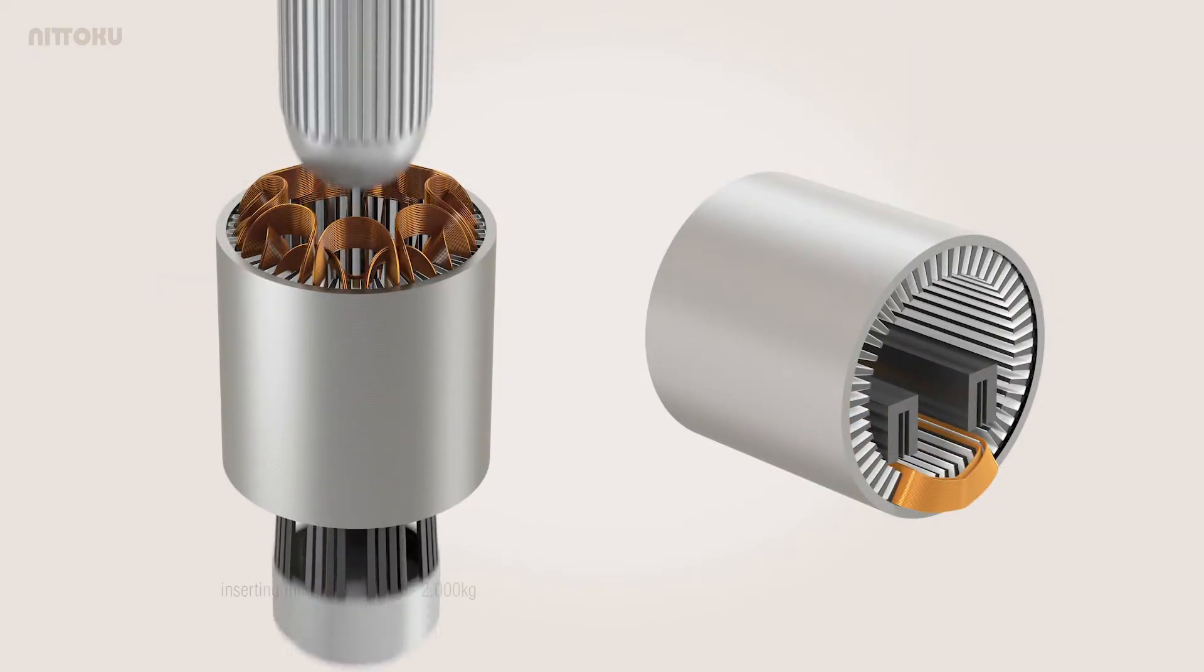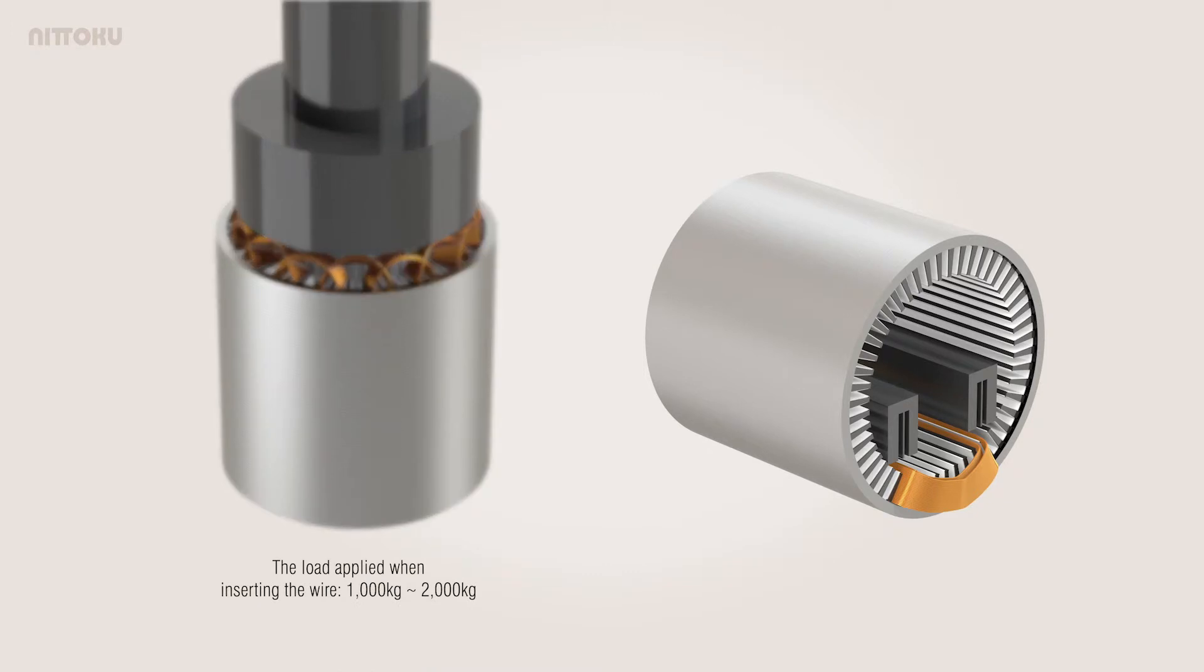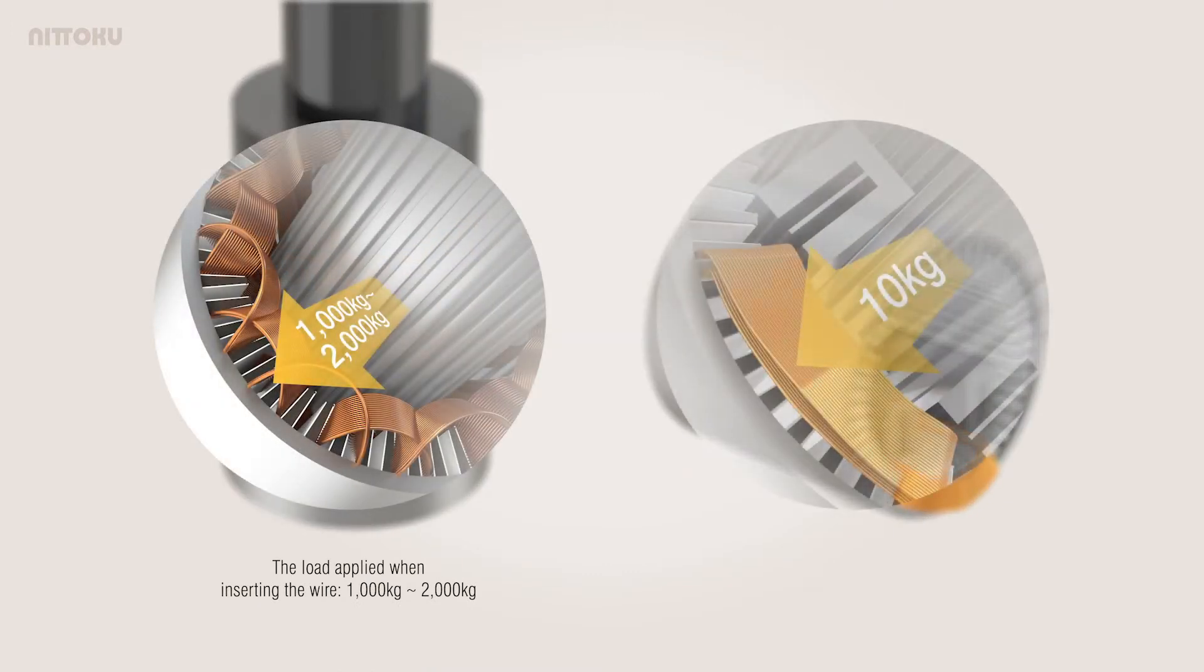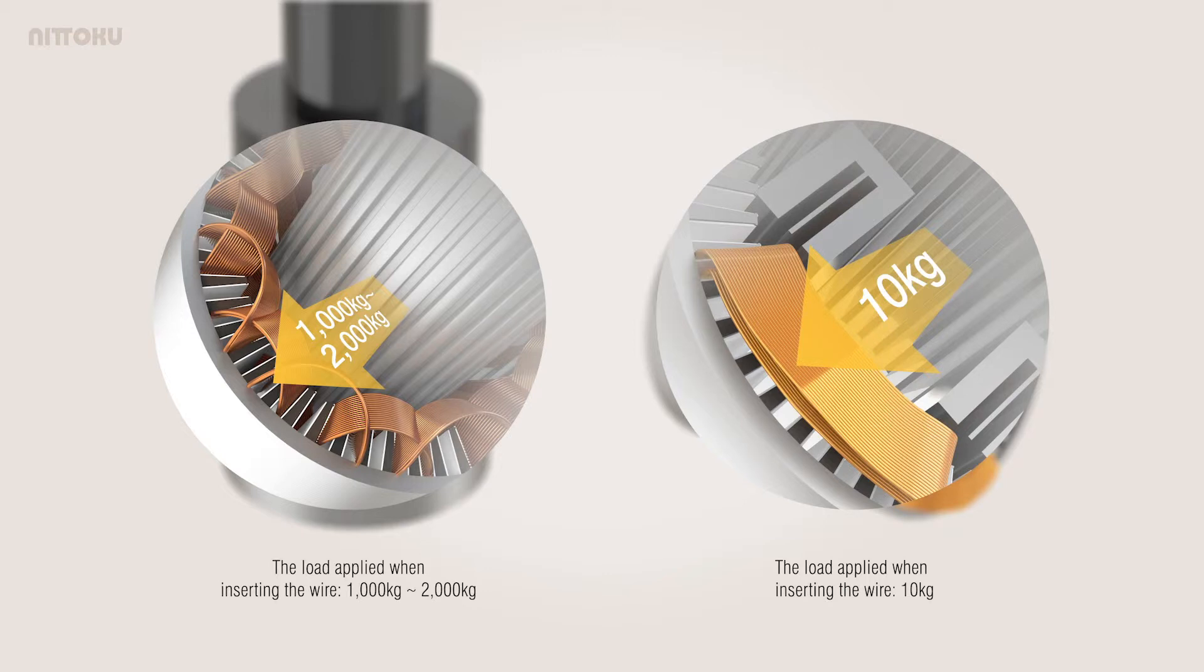This is because the load applied when inserting the wire by the inserter method is 1,000 kg to 2,000 kg, where the cassette method allows the wire to be inserted to the slot with a load of about 10 kg.